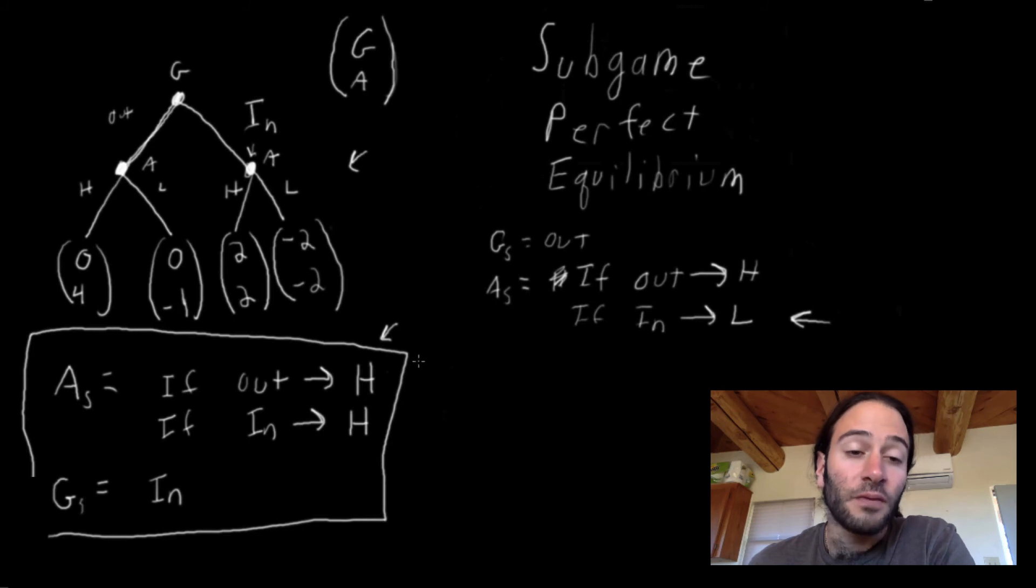Now you can verify that this is also a Nash equilibrium. So we can also show that this method of backward induction, the strategy profile that results from it, is also a Nash equilibrium.